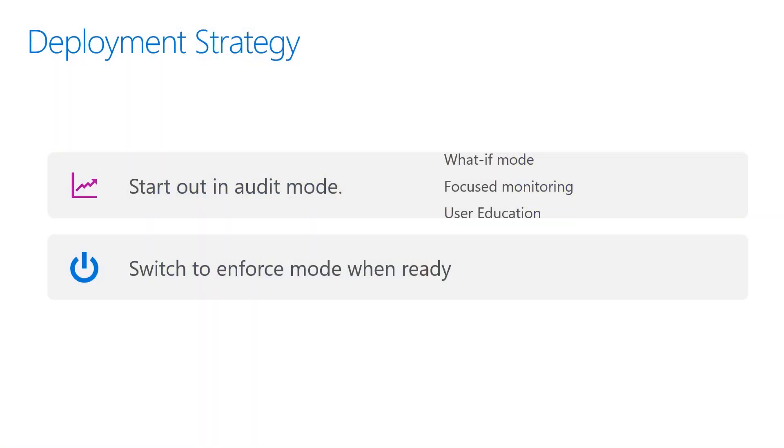Once the feature is configured and enabled for on-prem, the next step is to plan and execute your deployment. There are no specific steps in Azure for deploying password protection, as each time a user or administrator resets or changes an Azure AD password, it validates it through the global banned password list. You can further enable a custom banned password list from Azure Portal as needed. We recommend starting with audit mode — this is a what-if mode helpful to monitor the impact the password policy will have on users and the environment when the policy is enforced.